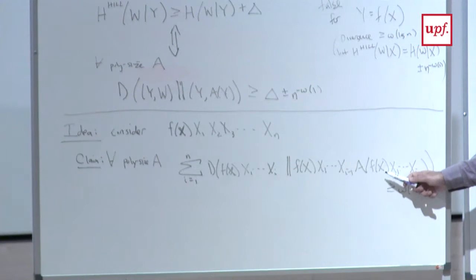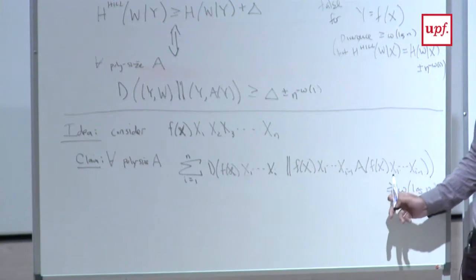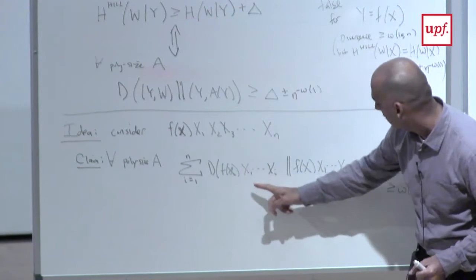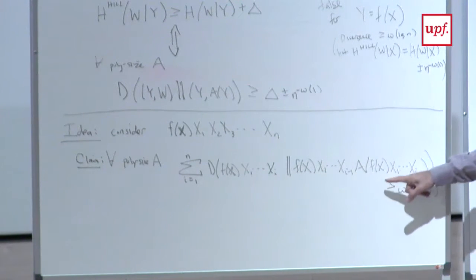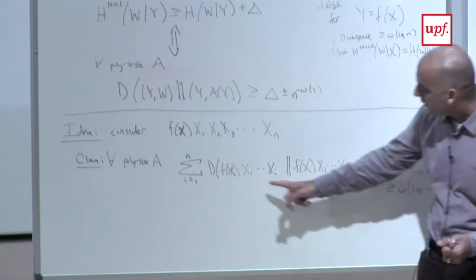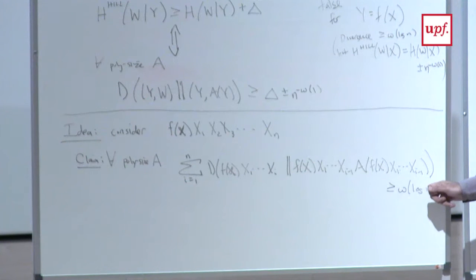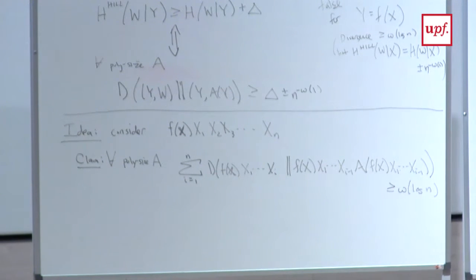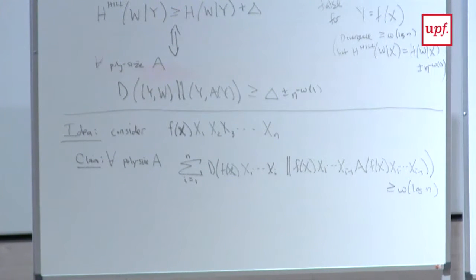The claim is that for every poly-size A, if I look at the sum of these divergences — from (f(x), x_1, ..., x_i) to (f(x), x_1, ..., x_{i-1}, A(f(x), x_1, ..., x_{i-1})) summed from i=1 to n — this sum is going to be at least super-logarithmic in n. Our adversary is now trying to sample one bit at a time: given f(x) and the previous bits, it tries to get the next bit, and we measure how far it is from the right conditional distribution.